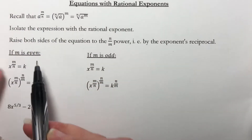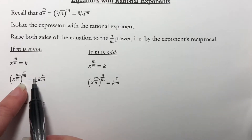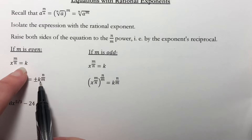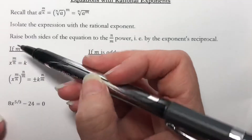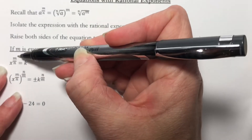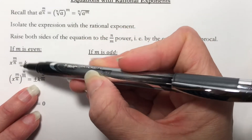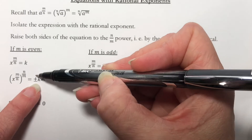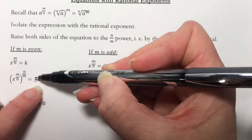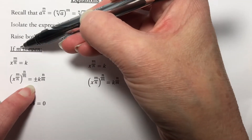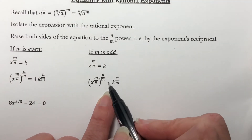If m is an even number, we rewrite with a plus or minus, raising both sides to the reciprocal exponent: x equals plus or minus k to the n over m. We have to use a plus or minus because m is even. If m is odd, it works the same way except we don't need a plus or minus.